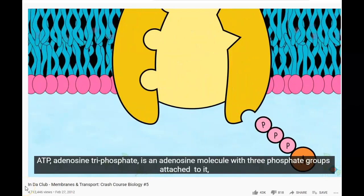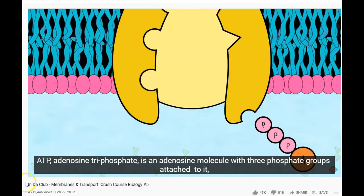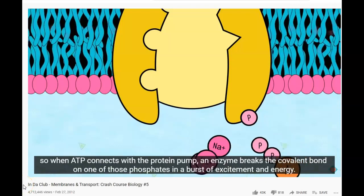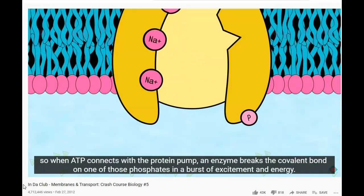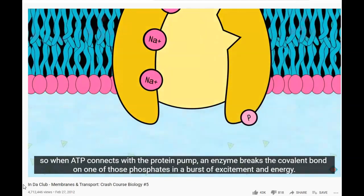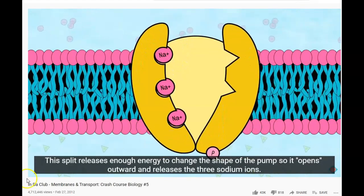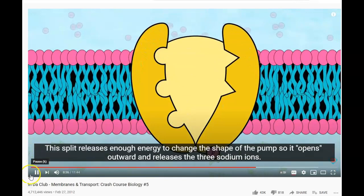ATP, adenosine triphosphate, is an adenosine molecule with three phosphate groups attached to it. When ATP connects to the protein pump, an enzyme breaks the covalent bond on one of those phosphates in a burst of excitement and energy. The split releases enough energy to change the shape of the pump so that it opens outward and releases three sodium ions.